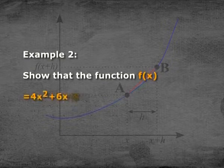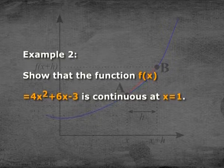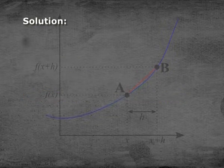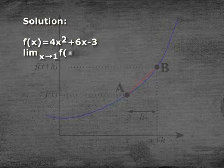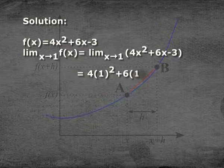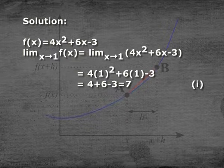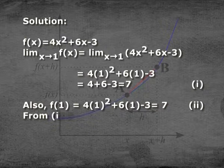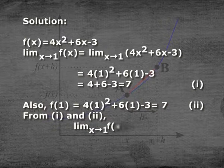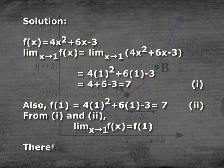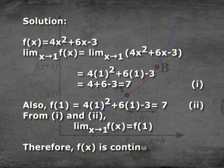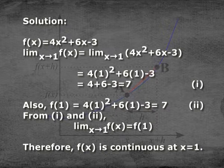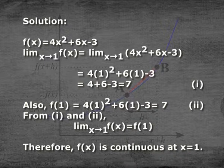Example 2: Show that f(x) = 4x² + 6x − 3 is continuous at x = 1. Solution: limit x→1 of f(x) = limit x→1 of (4x² + 6x − 3) = 4(1)² + 6(1) − 3 = 4 + 6 − 3 = 7. Also, f(1) = 4(1)² + 6(1) − 3 = 7. From these two equations, limit x→1 of f(x) = f(1). Therefore, f(x) is continuous at x = 1.